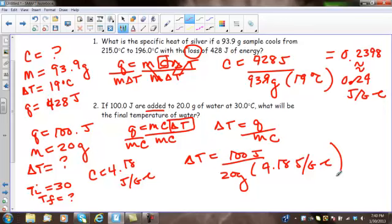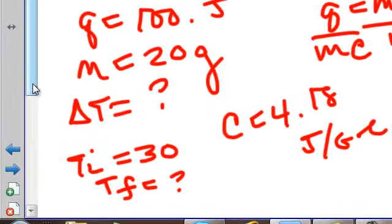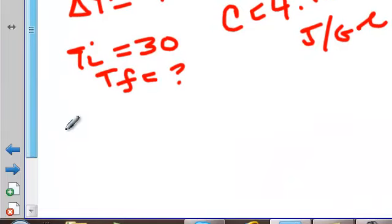Now, let's see what units cancel. So, my joules are going to cancel. My grams are going to cancel. I'm going to be left with Celsius, and that makes sense, because delta T is in Celsius. So, delta T is equal to 100 divided by 20 times 4.18. And that's going to give me 11.96. So, for purposes of this class, we can round this to 12 degrees Celsius. That is not my answer. All I did was solve for delta T. Remember, I need T final.